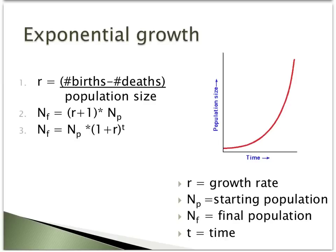There are three equations that are used for different calculations involving exponential growth. First, exhibited in equation number one, you may need to know what the growth rate or R of a population is. To do this, you can subtract the number of deaths from the number of births over a given period of time and divide it by the size of the population.